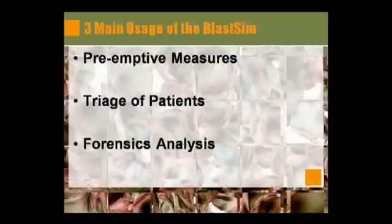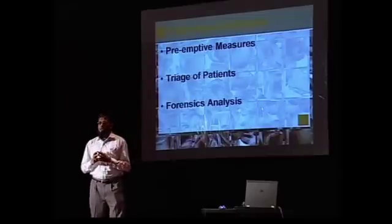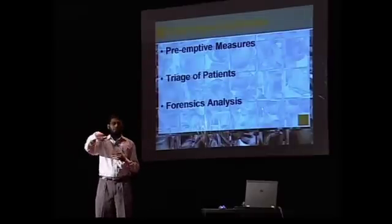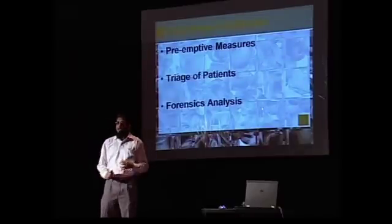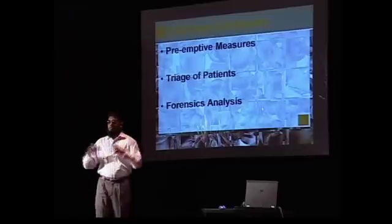So there are three main users of the software. Number one is pre-emptive measures. For example, one thing we found: if you put the crowd in row-wise formation — as you sit in a mosque, or in classrooms, or as we are sitting right now — instead of a circular session, you will have one third of the casualties. So you can save 33% of lives just by putting people in a particular formation.